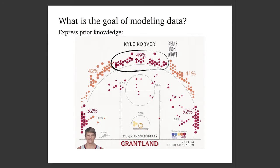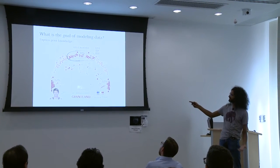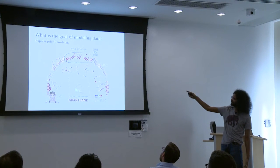Another goal that's very important is expressing prior knowledge. Here we have a shot chart of Kyle Korver, who is a three-point shooter. There's lots of prior knowledge about where he'll take shots and how accuracy is related — for instance, the way he shoots in one position is related to how he shoots nearby. And where he takes shots is related to the kind of player, which is structured by the lines on the court.